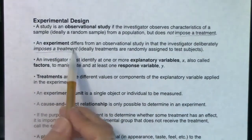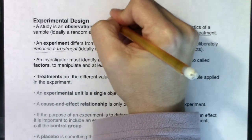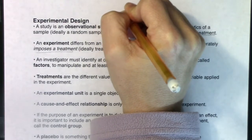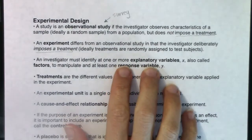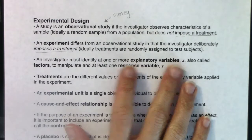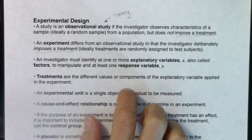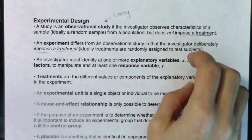The most common observational study you've probably seen is a survey. When you fill out surveys, nobody's telling you what to think — they're just getting your opinion, not imposing any treatment. So if you're the investigator, you're going to identify one or more explanatory variables, sometimes called factors, which we'll call x. We manipulate those and then measure at least one response variable y.